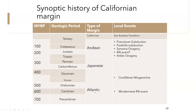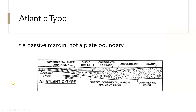The Atlantic margin occurred from the Silurian to Precambrian time, characterized by the Cordilleran Miogeocline and the Windermere rift event. The Atlantic type is a passive margin and not necessarily a plate boundary. We might see rifted continental margins and sediment prisms. Here we have continental crust, the Miogeocline, a craton, continental slope and rise, and oceanic and transitional crust — showing the interaction between continental and oceanic crust with a continental slope and rise created.